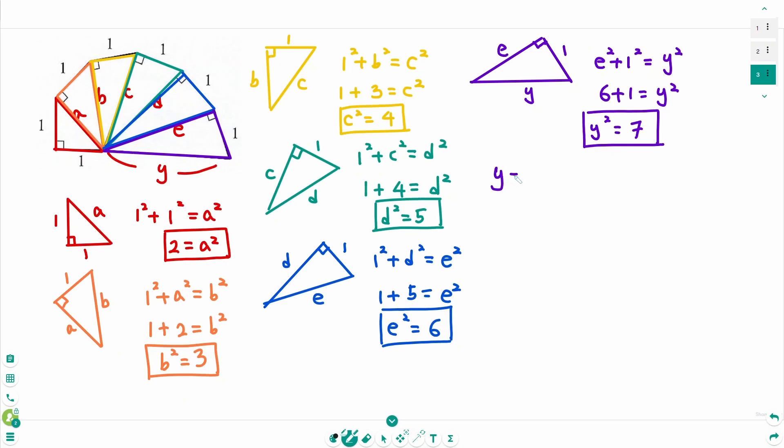Then Y equals square root of 7 or minus square root of 7. But this one is rejected because Y is the length, which is always positive. Then finally, Y equals square root of 7.